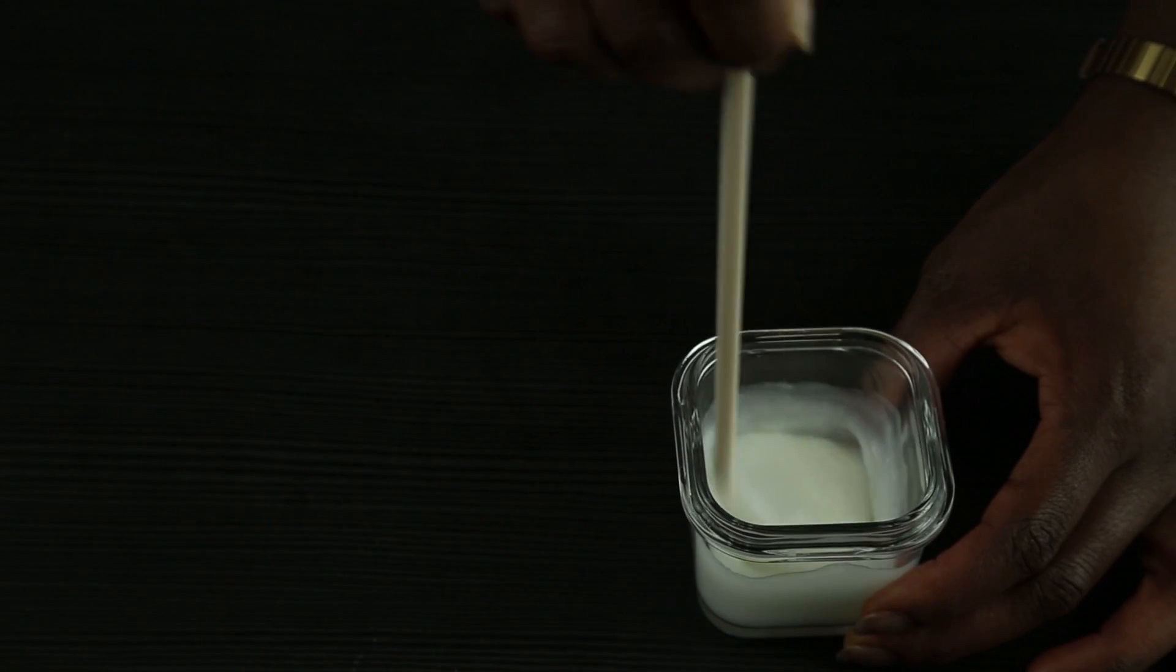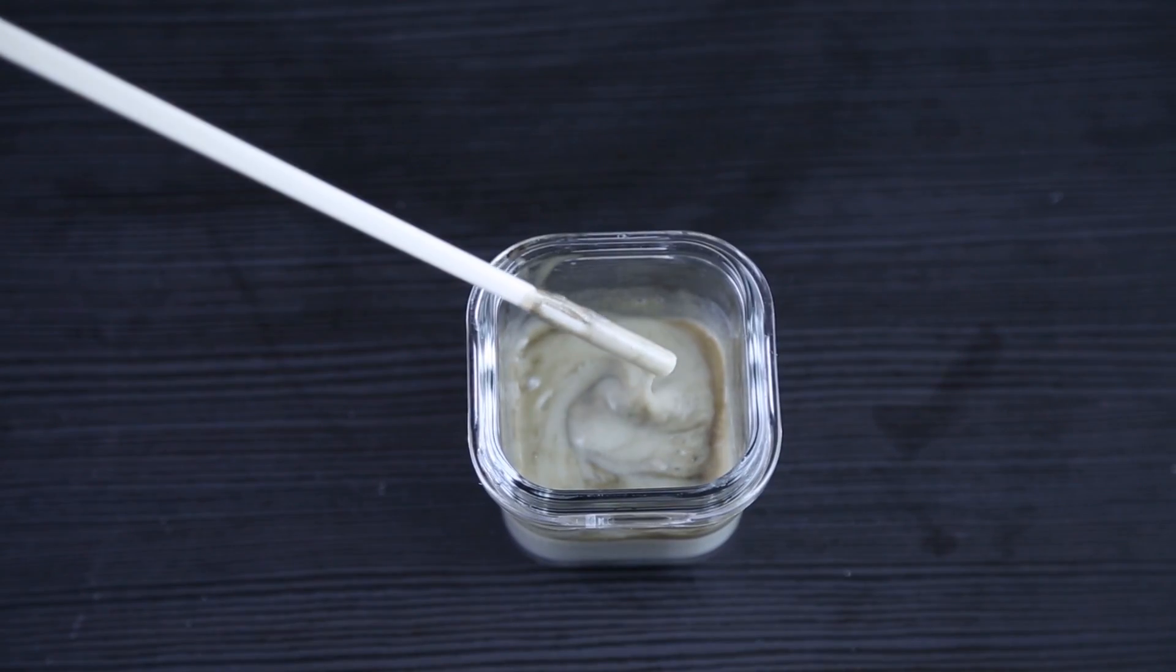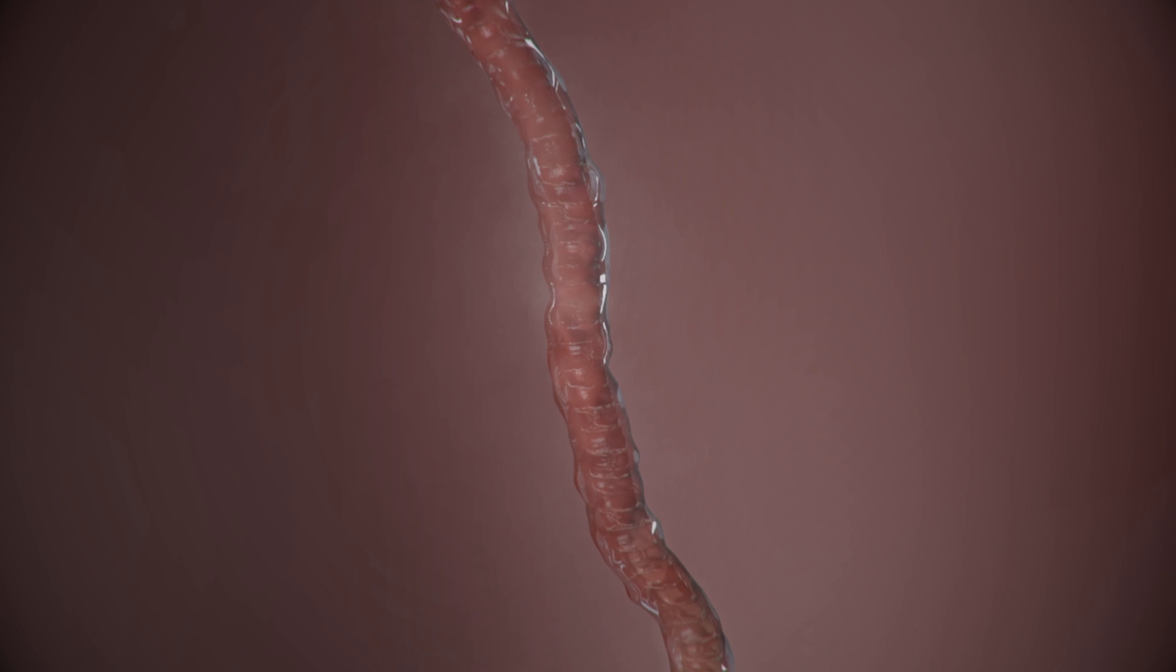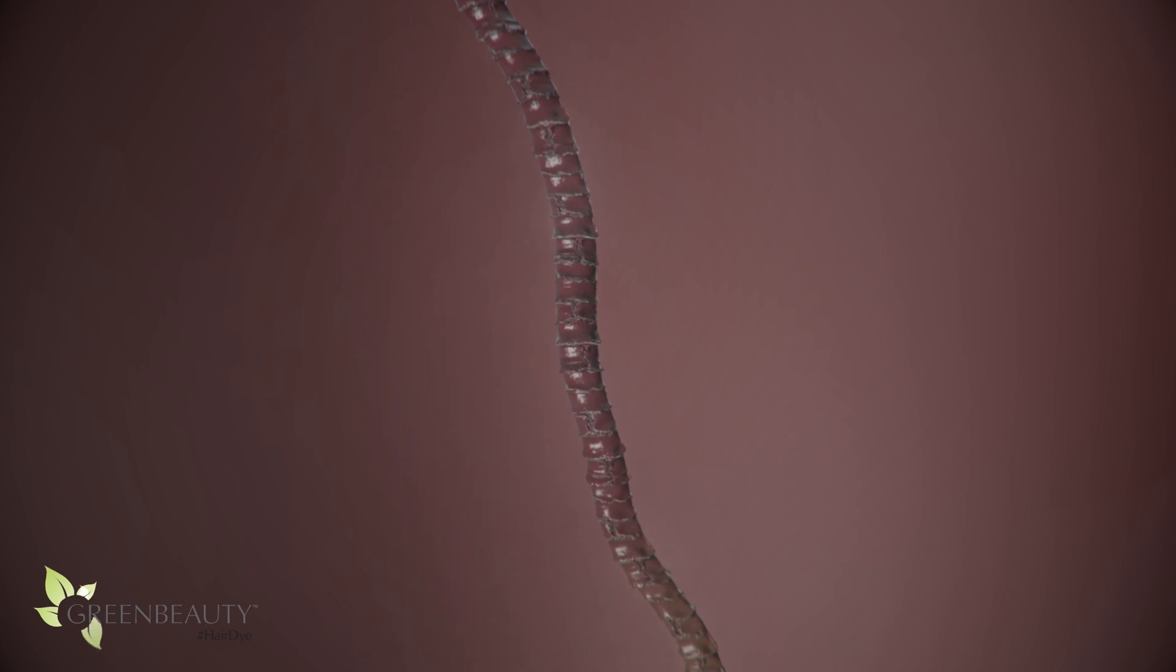These two components are mixed immediately before adding it into your hair. Once added, the alkaline pH of the ammonia causes the hair cuticles to swell, lift, and even dissolve in some sections.